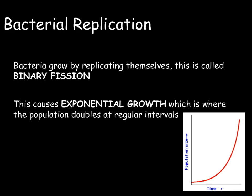This means that they replicate exponentially, showing exponential growth where the population doubles at regular intervals. We can see that the population is increasing, albeit at a very slow rate at first, and then all of a sudden it will explode into a much larger population. This is why you can go from feeling perfectly fine to feeling incredibly ill with a bacterial infection over a short period of time.